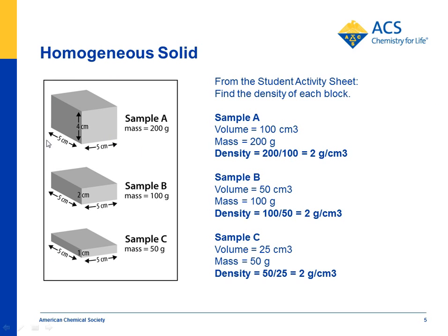On the activity sheet, we show students a sample A that's 5 by 5 by 4, which means it is 100 cubic centimeters. And if it weighs 200 grams, you do the math, you get 2 grams per cubic centimeter.